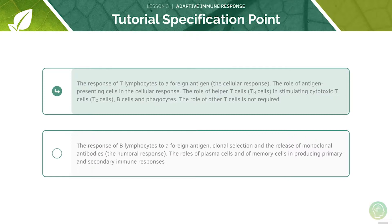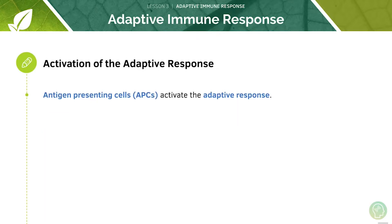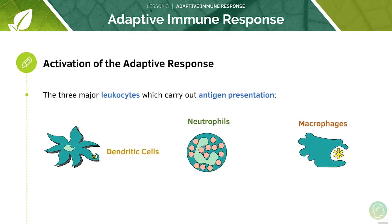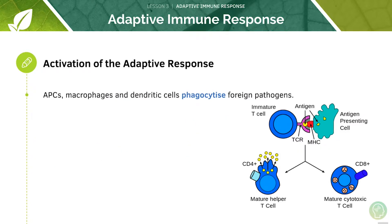We'll start by looking at the responses of T lymphocytes. Earlier we discussed how leukocytes — macrophages and neutrophils — break down pathogens via phagocytosis and also how they can present antigens. These antigen-presenting cells will activate the adaptive response. There are three major leukocytes which carry out antigen presentation: dendritic cells, neutrophils, and macrophages. When macrophages and dendritic cells phagocytose foreign pathogens, they display the antigens.